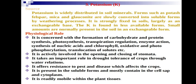Potassium offers resistance to pests and diseases, and importantly it offers resistance to both abiotic and biotic stresses. It is present in soluble form mostly contained in the cytoplasm of cells. It is readily mobile within plant tissue. Three key physiological roles of potassium are: opening and closing of stomata, tolerance to biotic and abiotic stresses, and being readily mobile within the plant.